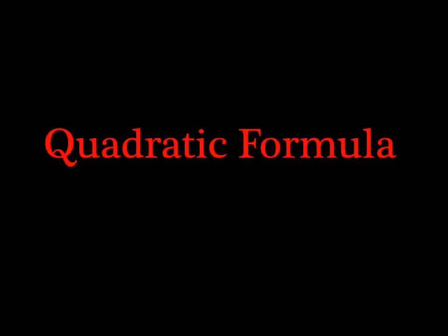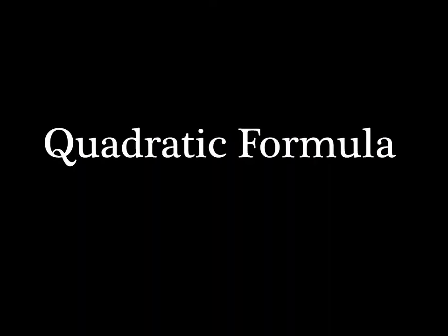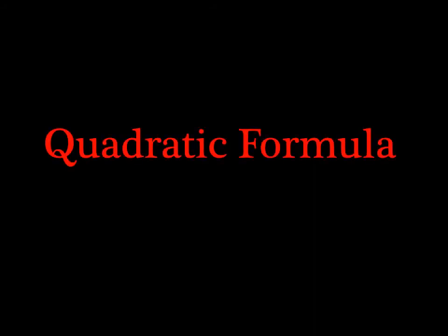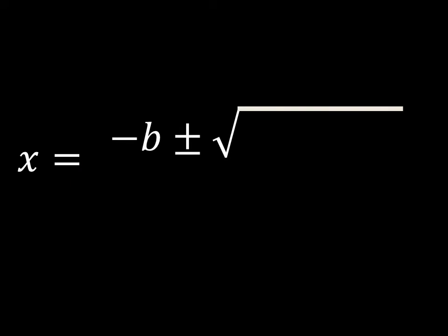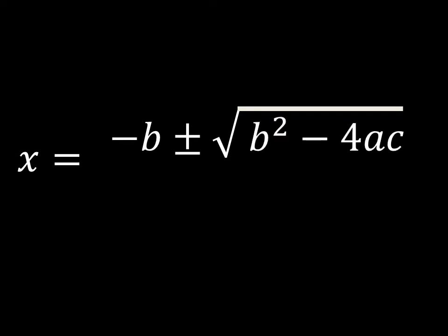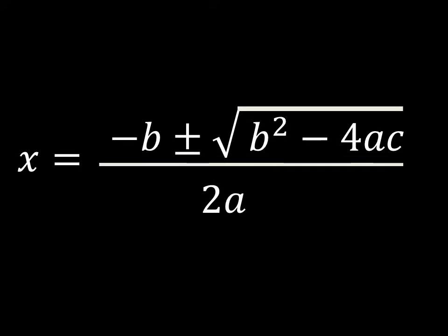Quadratic formula. Opposite b plus or minus the square root of b squared minus 4ac all over 2a. 2a all over 2a.